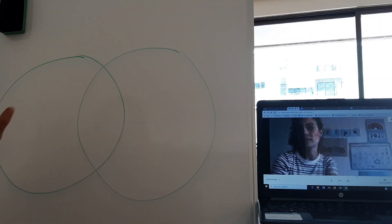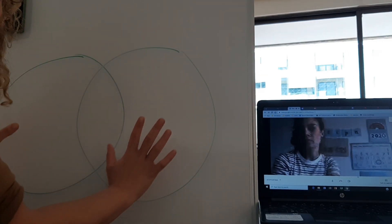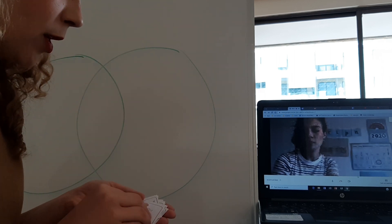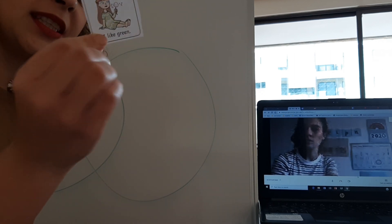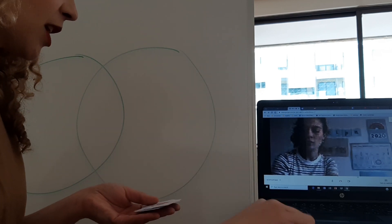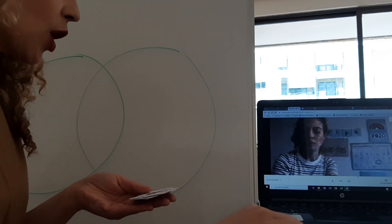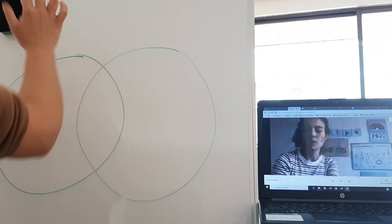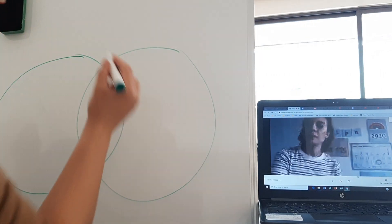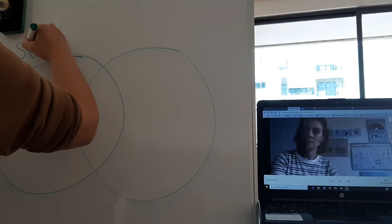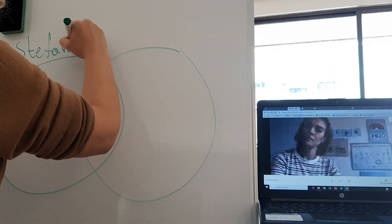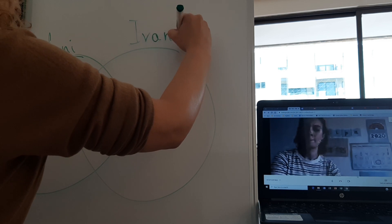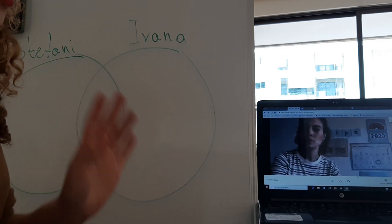Now first, take a look here — this is what we call a Venn diagram. So here we have these two circles. You have a worksheet that we sent you, and on it you have a lot of these different little pictures — it says 'I like green,' 'I like snow,' 'I like maths,' and so on. One of these circles is going to be for Miss Stephanie, so I'm writing her name 'Stephanie,' and the other circle is going to be for me, so I'm writing my own name 'Ivana.'